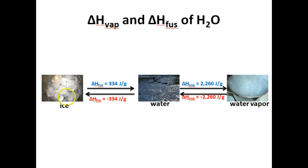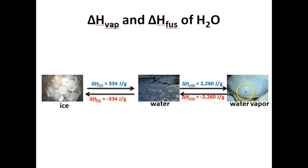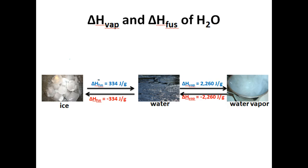We have some ice, and this ice is going to melt and turn into water. If I continue to heat this water up or add thermal energy, it's going to turn into water vapor. Conversely, if I cool this water vapor down, it's going to condense and turn back into water. And if this water loses more thermal energy, it's going to turn back into ice.